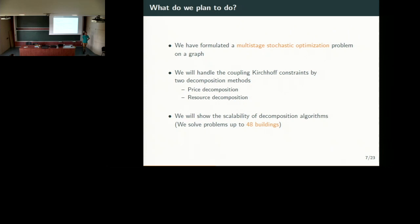We will see that our problem scales to problems with up to 48 buildings — that is, with a state of dimension 90 to 100 state variables, which is quite huge for a multi-stage stochastic problem. Because usually classical methods like SDP are confronted with the famous curse of dimensionality, and they cannot solve problems with more than 20 state variables. So here we are reaching problems with around 100 state variables.